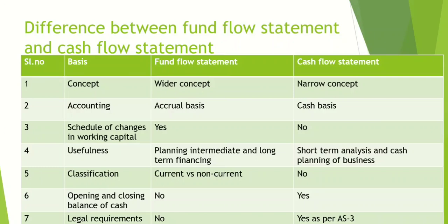The cash flow statement helps in short-term analysis, analyzing the outflow of cash and cash planning of business — how to optimally utilize cash resources. Point five — classification: the fund flow statement classifies assets into current assets and non-current assets, which is necessary for its preparation. Cash flow statement does not consider this classification. Point six — opening and closing balance of cash: this is not shown in the fund flow statement, but it is required and shown in the cash flow statement.